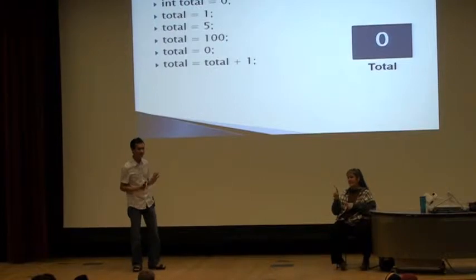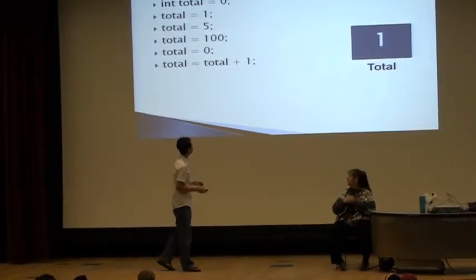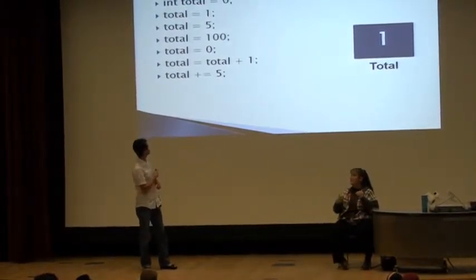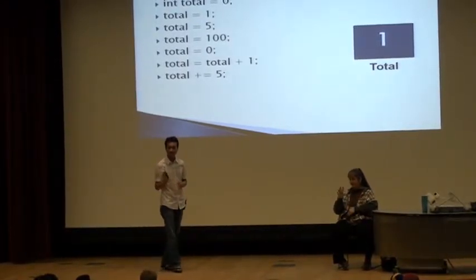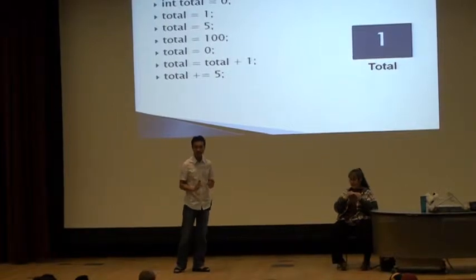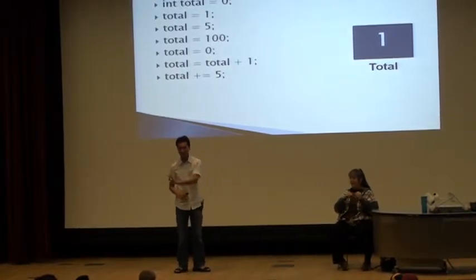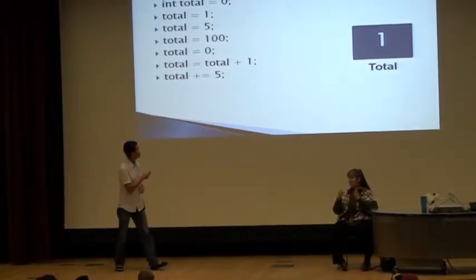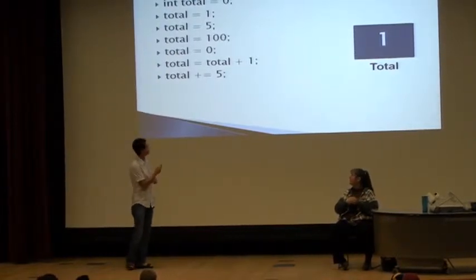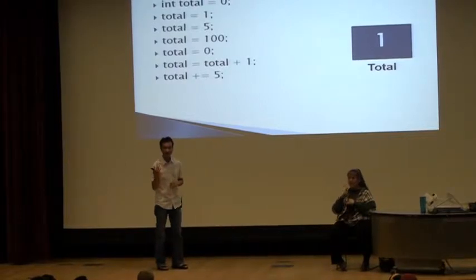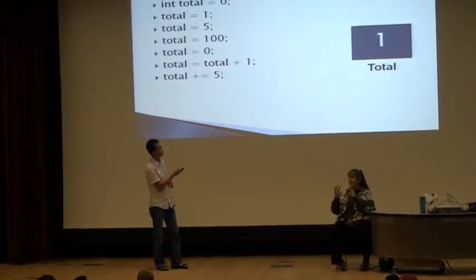It should be pretty obvious to you guys. It should be one. Now what's the next statement I want to do? I want to do total plus equals to five. From last class, we know that plus equal is just a shorthand for total equals to total plus something. So now I'm going to do the same thing. It's total plus equal to five. So then there's an implicit right-hand side reading of the total value of total. What is that?